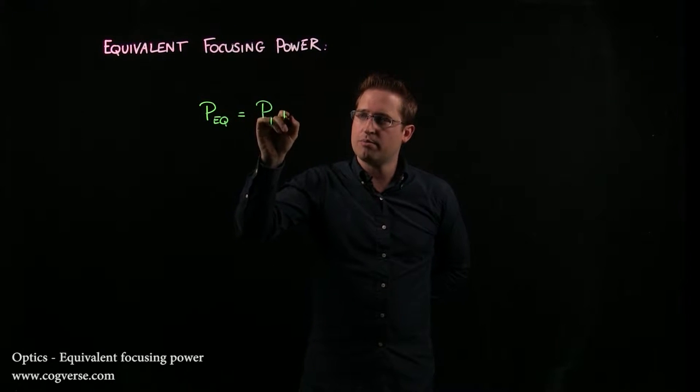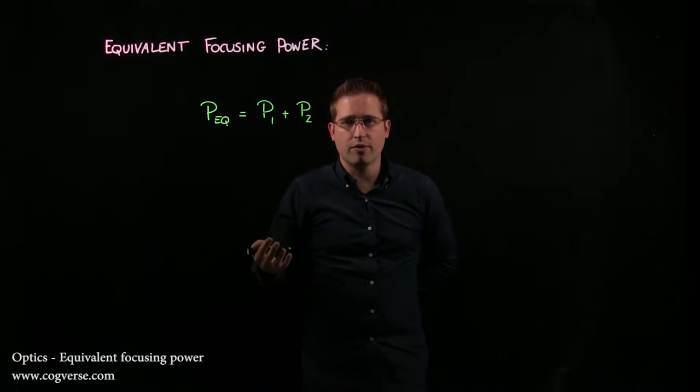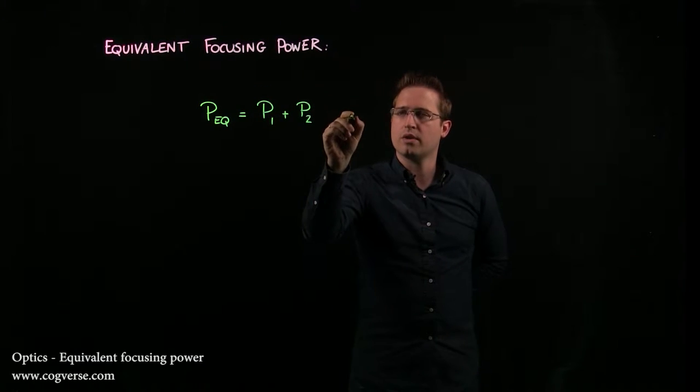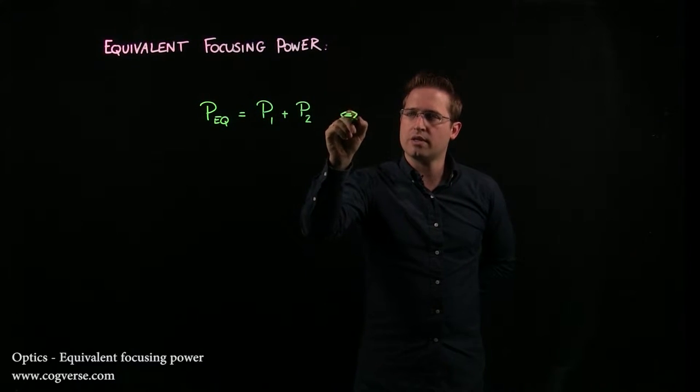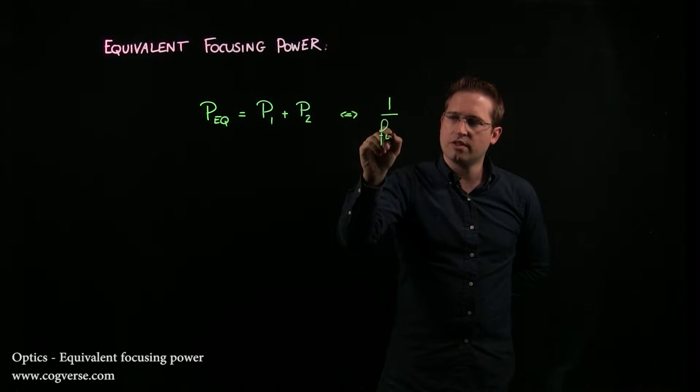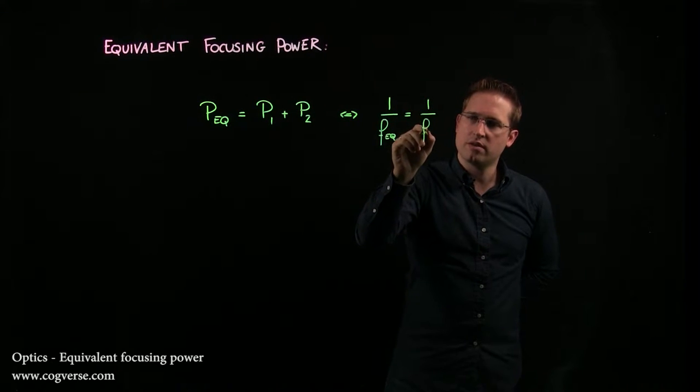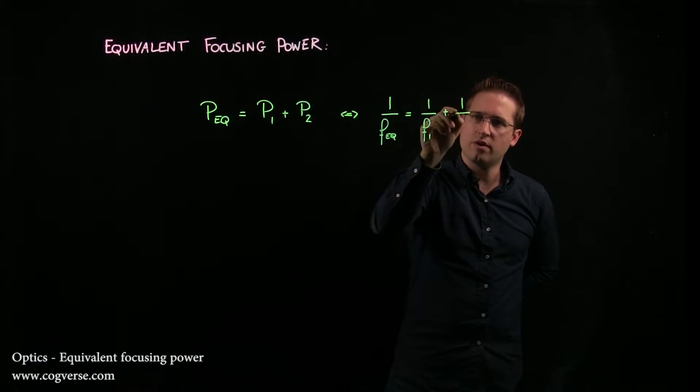Therefore, it would be p1 plus p2 if we assemble two lenses with focusing power p1 and p2. This is strictly equivalent to saying that one over the equivalent focal length is one over f1 plus one over f2.